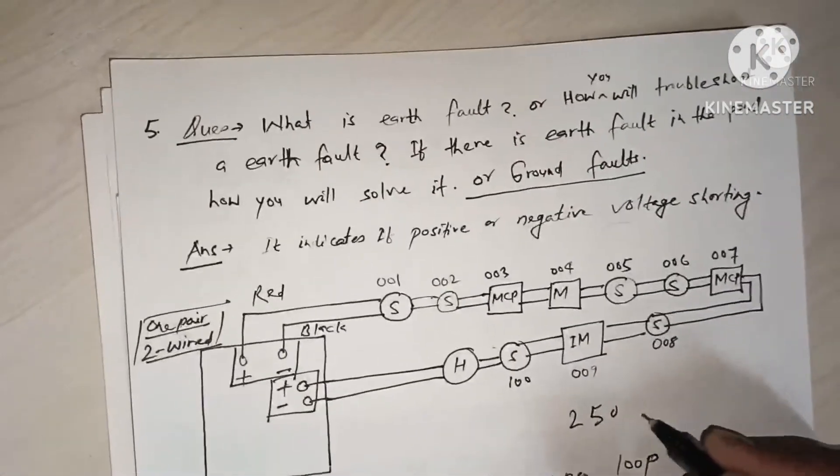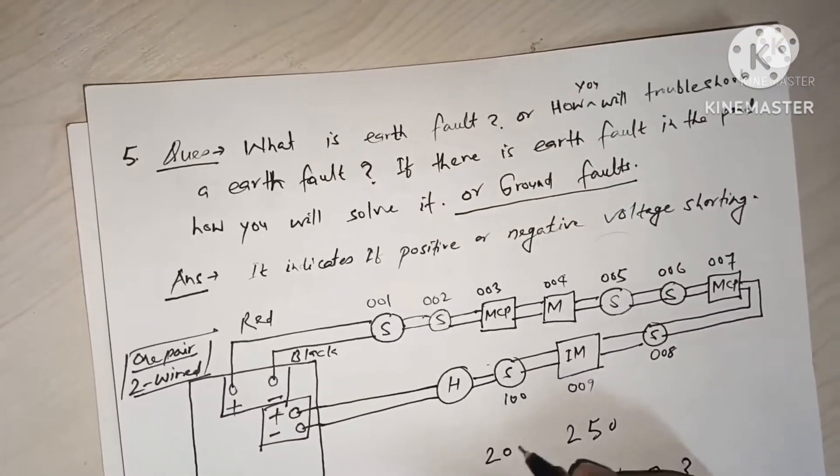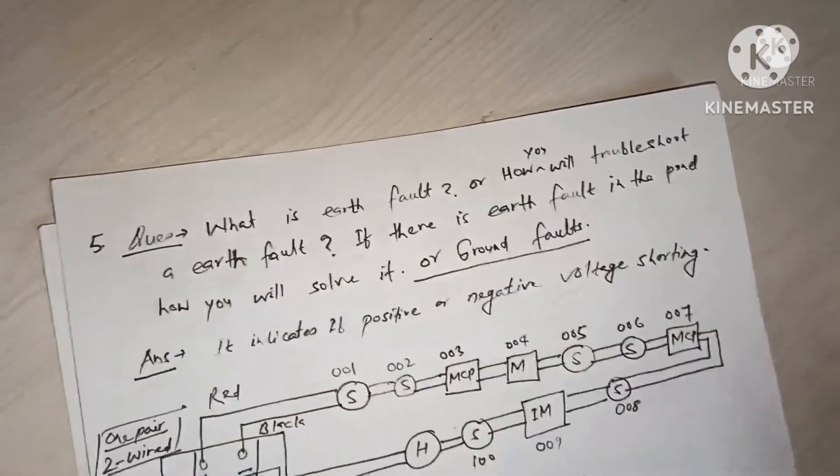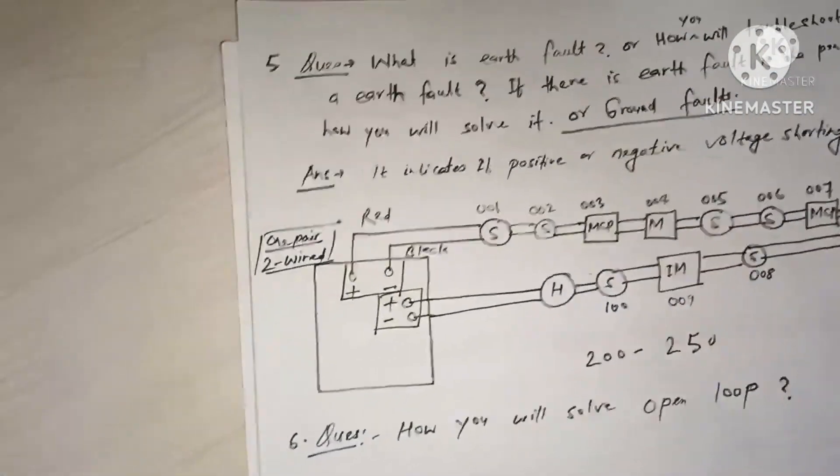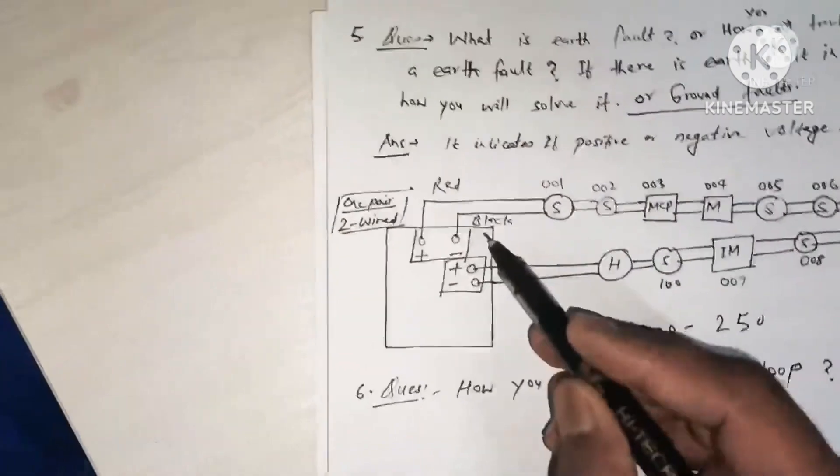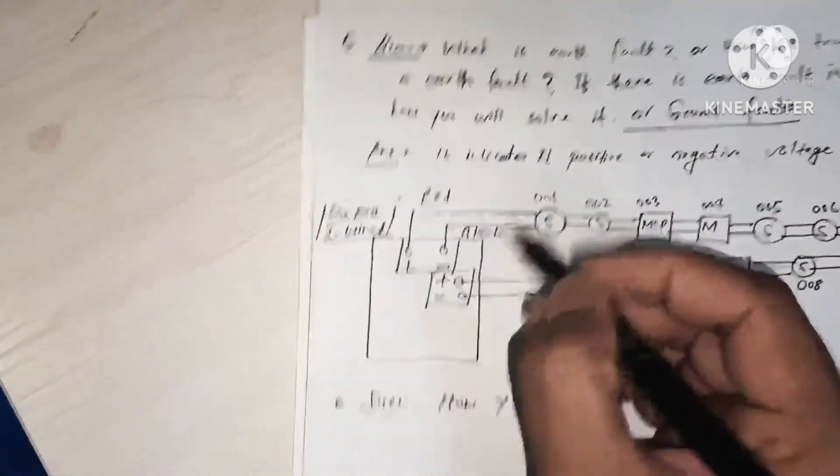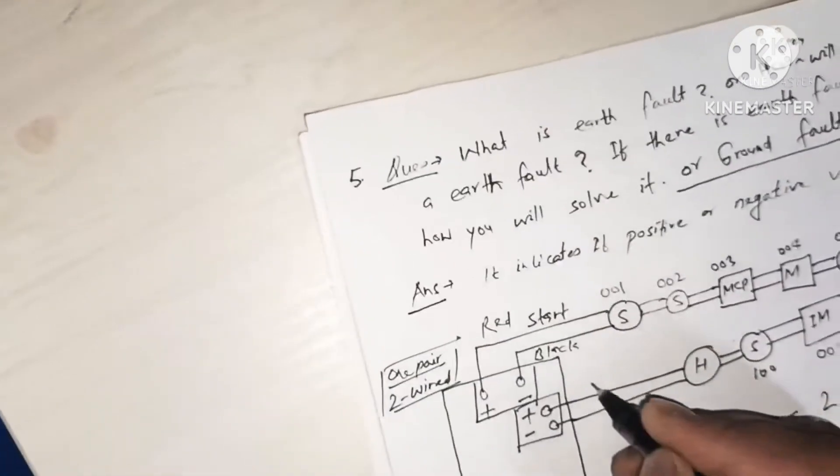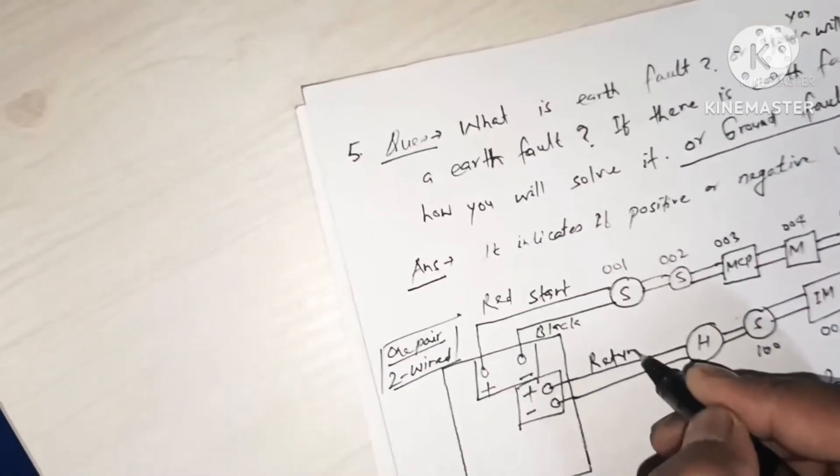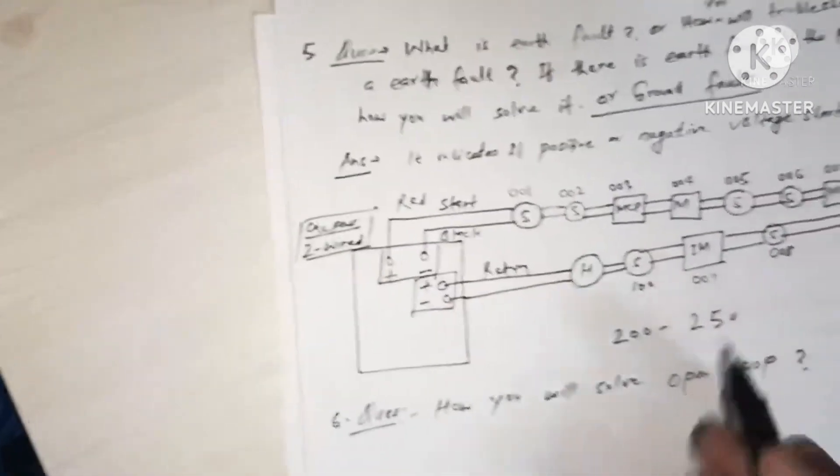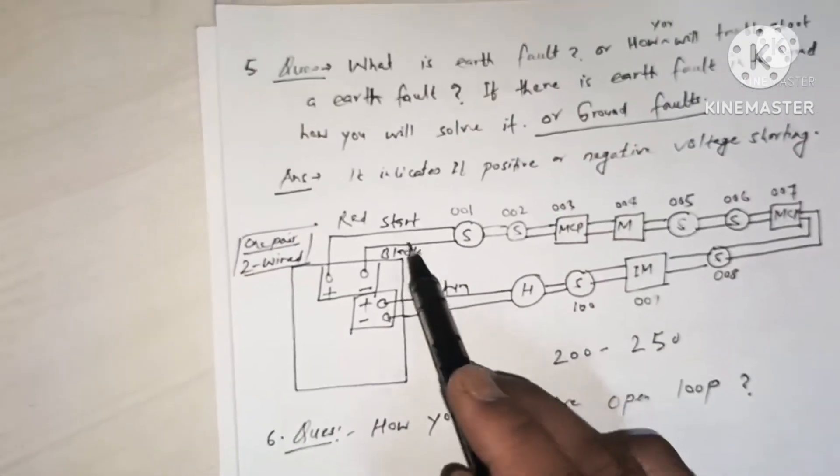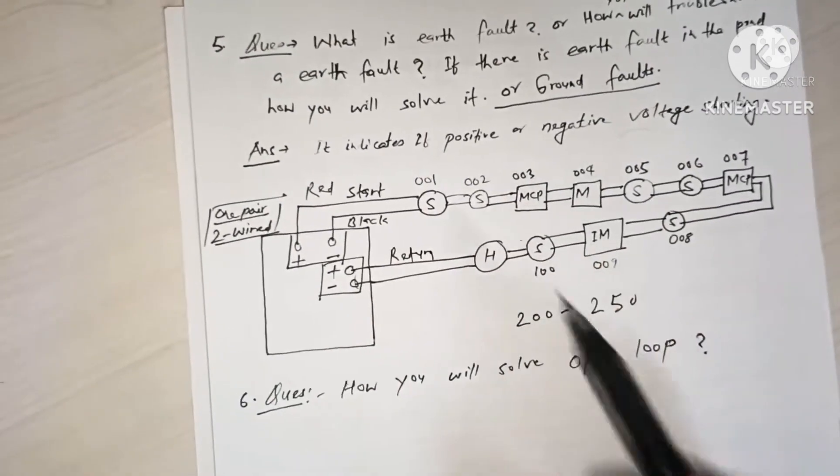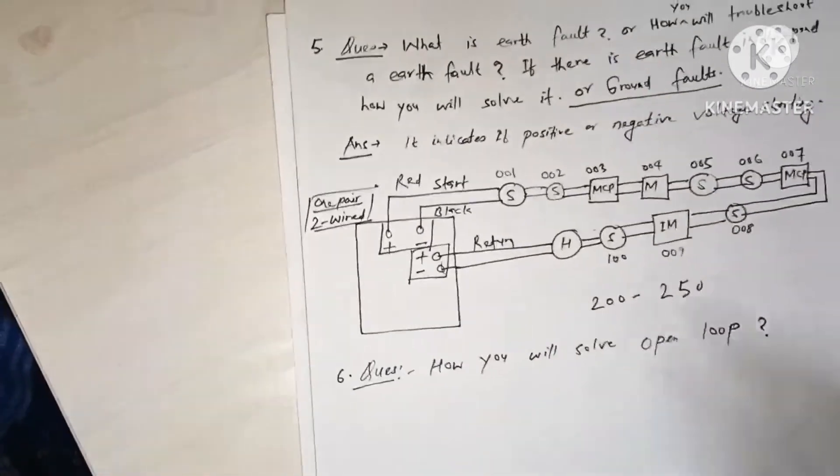So we have here, maybe like 20 or 50 devices - more devices. So it's not easy to search one by one the ground fault and check by your multimeter because we need multimeter here. So we will divide our loop in 50 percent. We will open - like we will start and return. So we will remove this return cable and then we will check the ground fault.